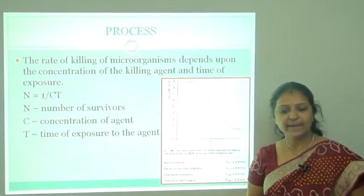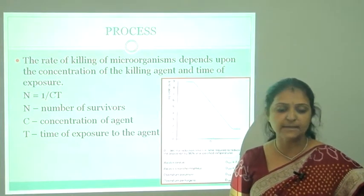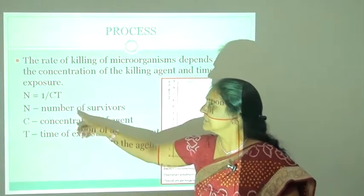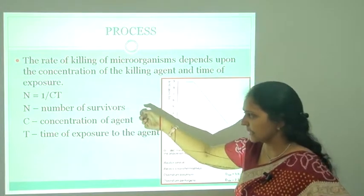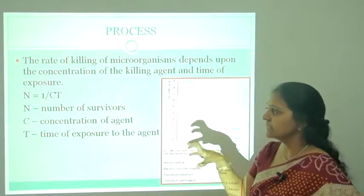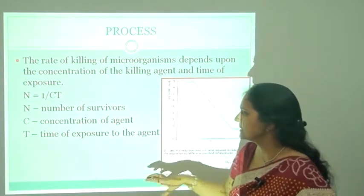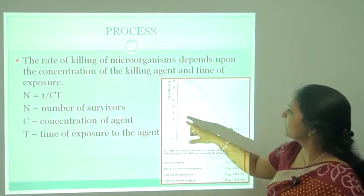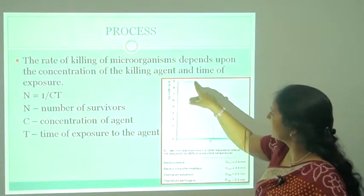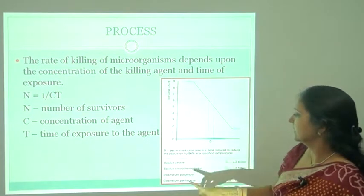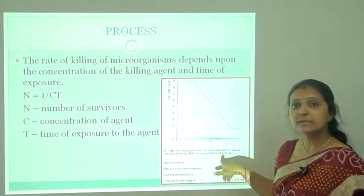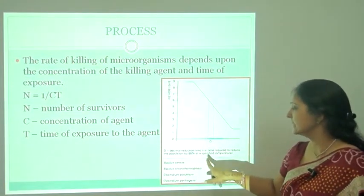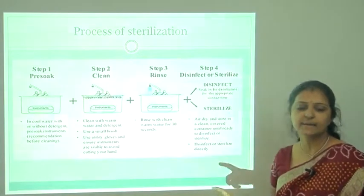The rate of killing of microorganisms depends on the concentration of the killing agent and the time of exposure. The equation is N = 1/(C×T), where N equals the number of surviving microorganisms, C equals the concentration of the agent used, and T equals the time of exposure. The number of microorganisms decreases as time goes on. D equals the decimal reduction time — the time required to reduce the population by 90% at a specified temperature.